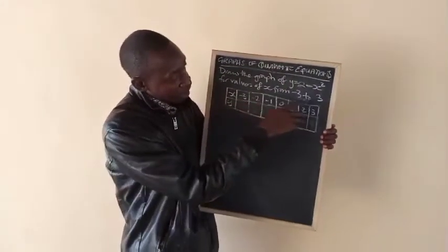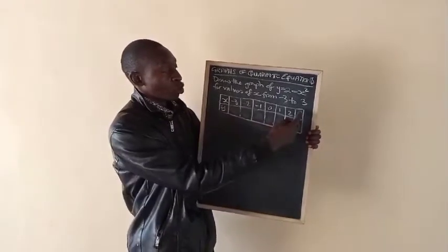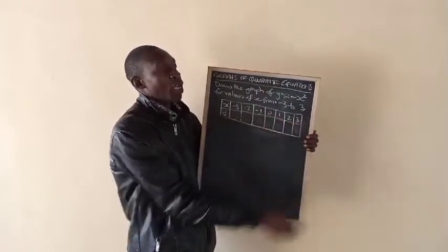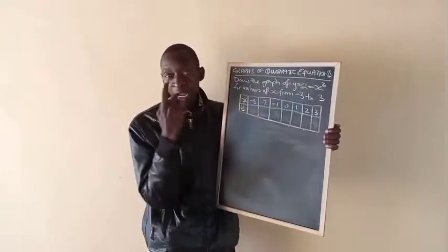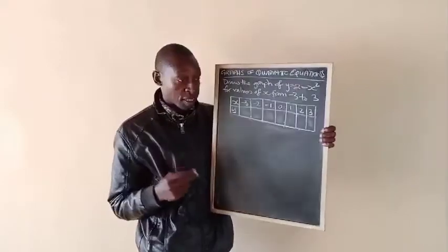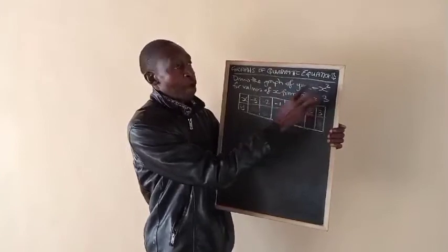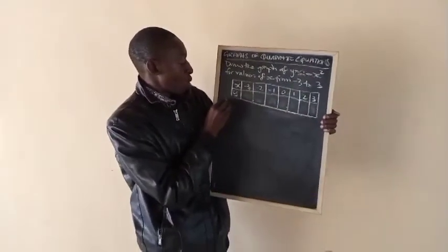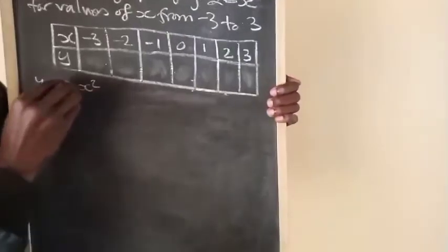For values of x from minus 3 to plus 3, we'll use those values. Let's take values and calculate. We need to find y values. Y equals 2 minus x squared, that's our equation.